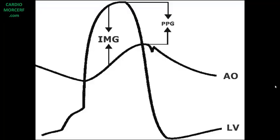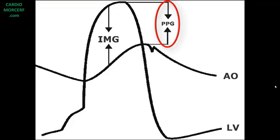It is important to know the difference between the peak gradient obtained by Doppler and that obtained by catheterization. The gradient obtained during cath is the so-called peak-to-peak gradient. With the catheter inside the left ventricle, the maximal pressure is obtained. Then the catheter is withdrawn toward the aorta, where the maximal aortic pressure is also obtained. The difference between the left ventricular and aortic maximal pressures is the peak-to-peak gradient.